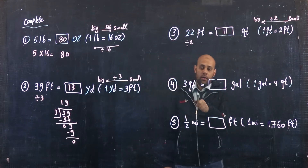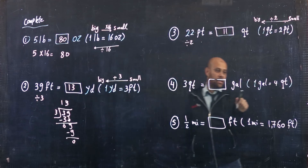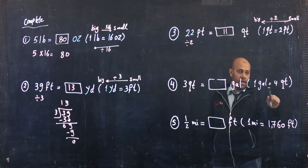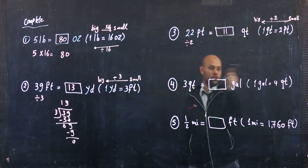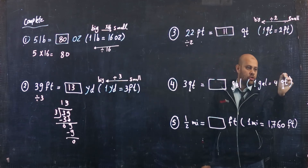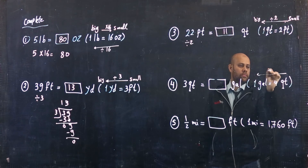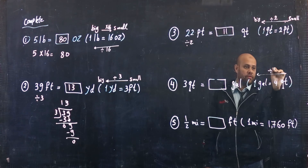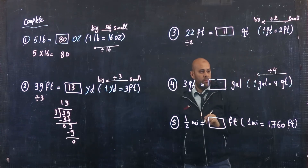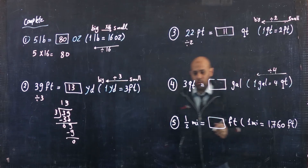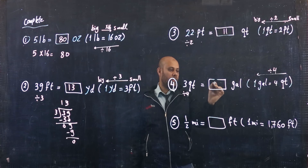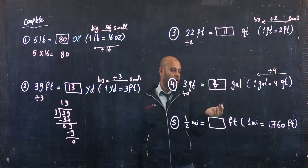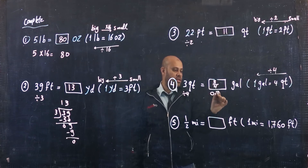The next exercise: 3 quarts equals how many gallons? 1 gallon equals 4 quarts. So I will convert from quarts to gallons — from small to big — so I will divide by 4. It's 3 divided by 4, which I can write as three-quarters, or as 0.75.